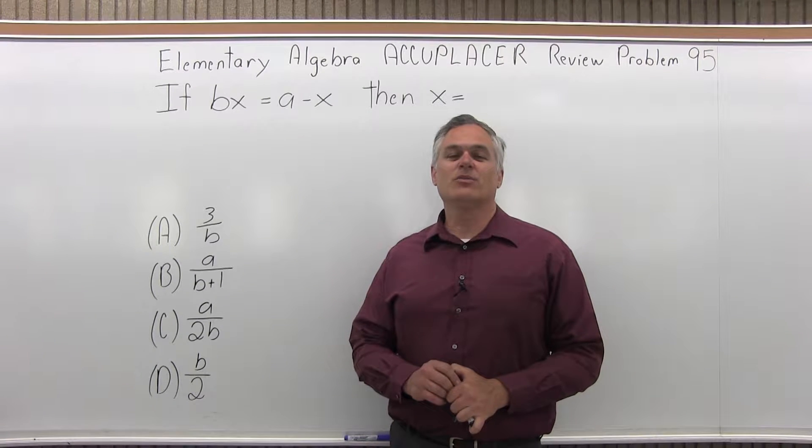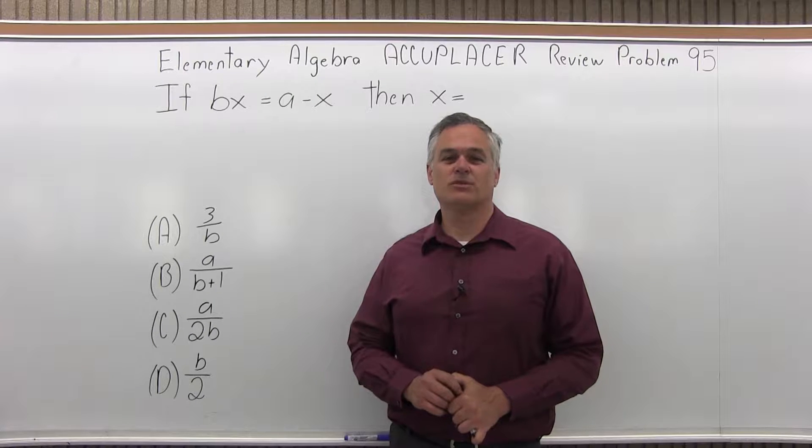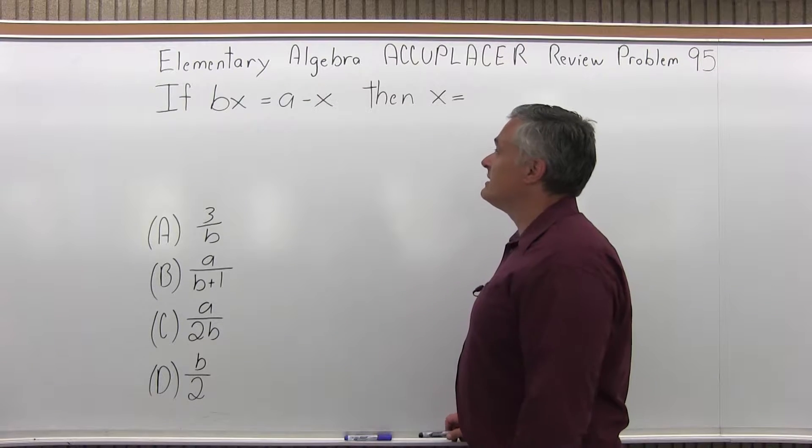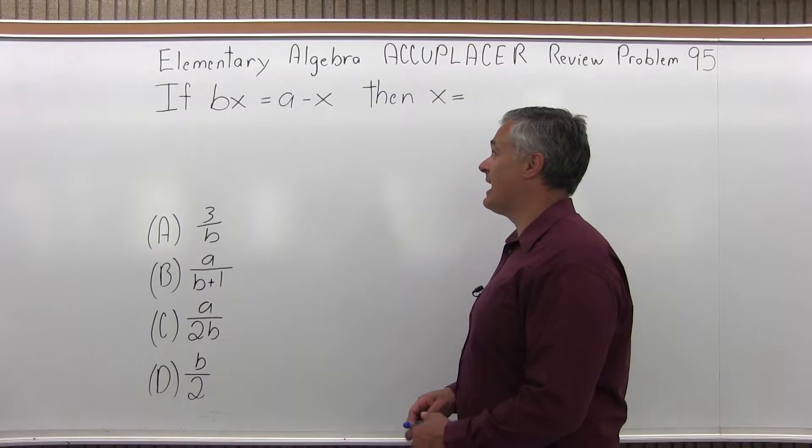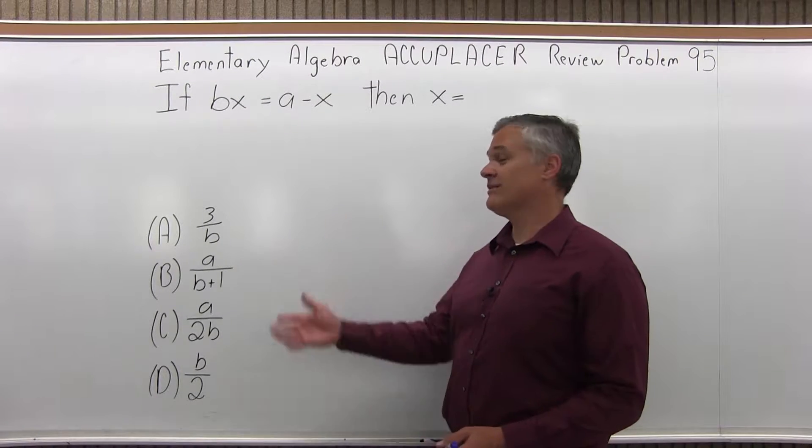This is the Elementary Algebra Accuplacer Review, Problem 95. It says if Bx equals a minus x, then x equals what? We have a few options.